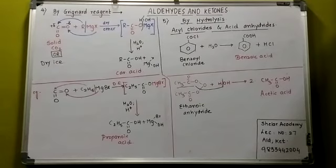...mein dry ether, next step mein acid hydrolysis. That is always Grignard reagent. The next method we go for is called a hydrolysis reaction—hydrolysis of acid chlorides or acid anhydrides.